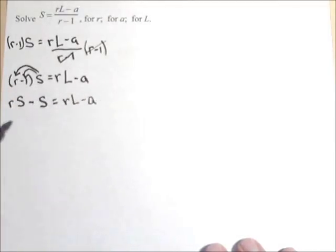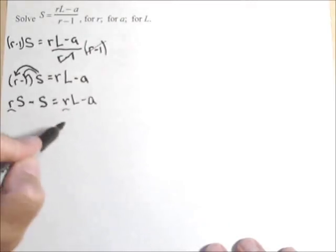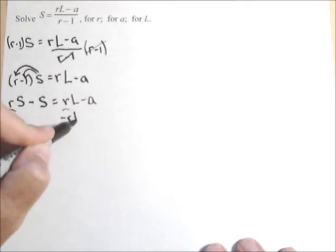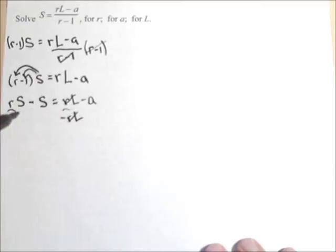We might be able to use some of this work in these other problems. Now, remember what we're trying to solve for. We're trying to solve for R. We have two of them in there. We need to get every term with R on the same side. So let's just bring them over to the left-hand side. I'm gonna subtract RL from both sides.